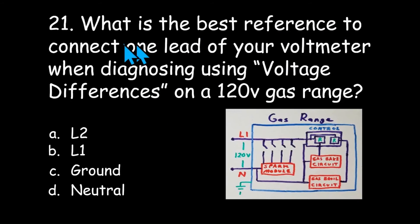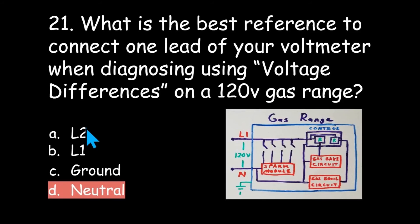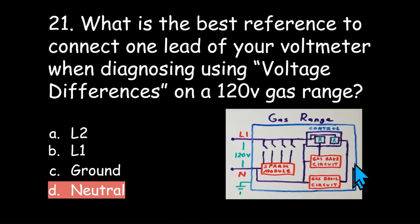Number 21: what is the best reference to connect one lead of your voltmeter when diagnosing using voltage differences on a 120 volt gas range? L2, L1, ground, or neutral? There's no L2, so we can count that one out. You wouldn't want to use ground because it's not actually part of this circuit. Neutral is your best bet because it's common to everything — it's your return path. Connect one lead to neutral and you can do a voltage difference check all the way through the circuit to paint a clear picture of what's going on.